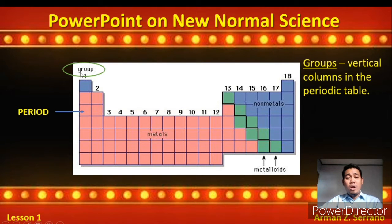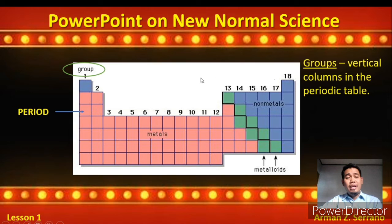So we have group 1A, group 2A, 3A, 4A, 5A, 6A, 7A, and 8A. Later, we will name these different families or groups in the Periodic Table.